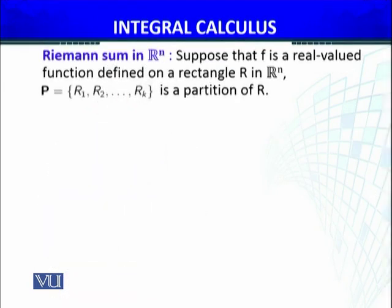So Riemann sums, suppose that F is a real-valued function, defined on a rectangle R, in R^n Euclidean space, which has the partitioning P equals R_1, R_2, so on and so forth, R_k. These are the sub-rectangles.